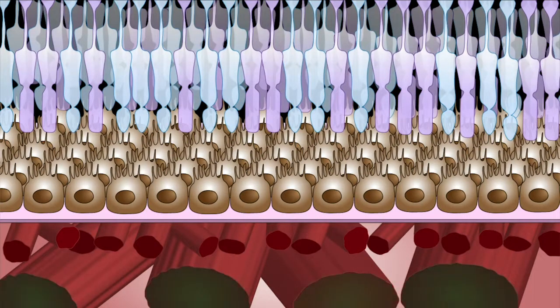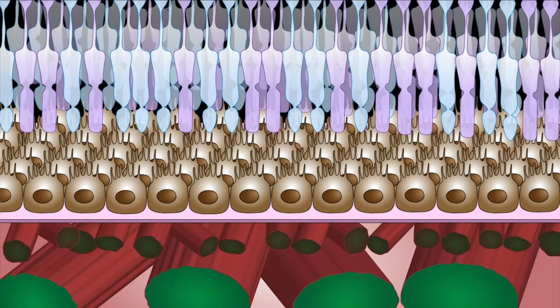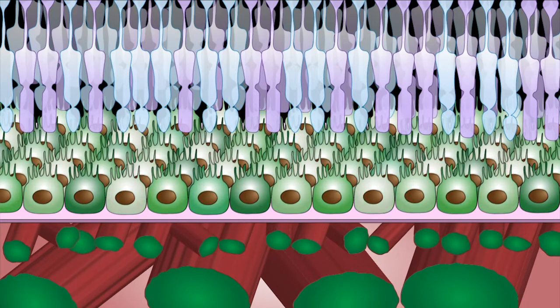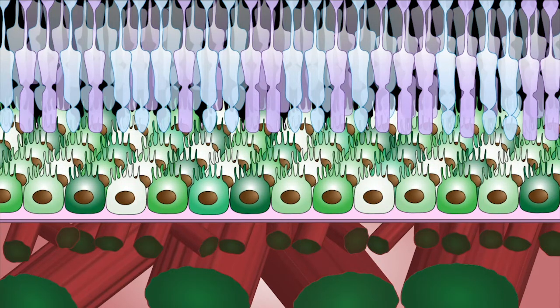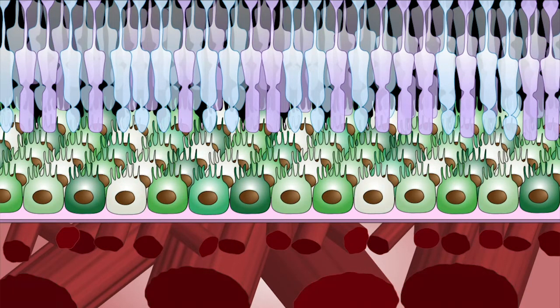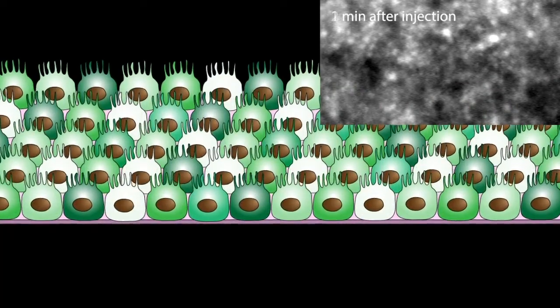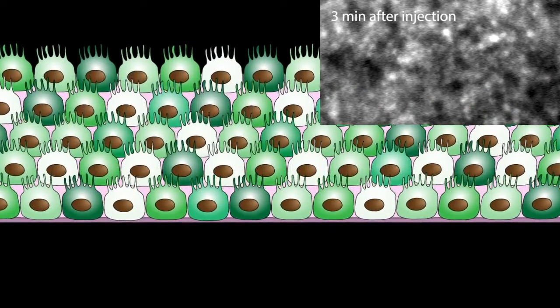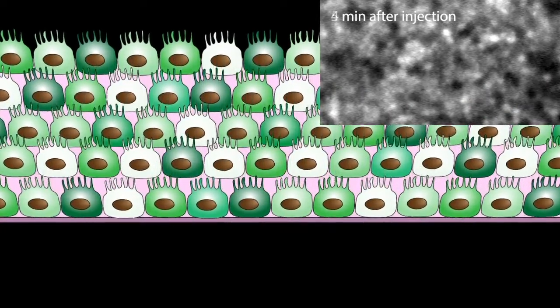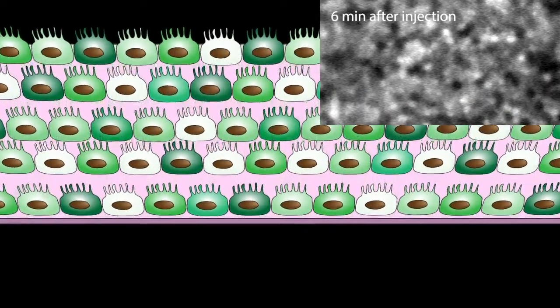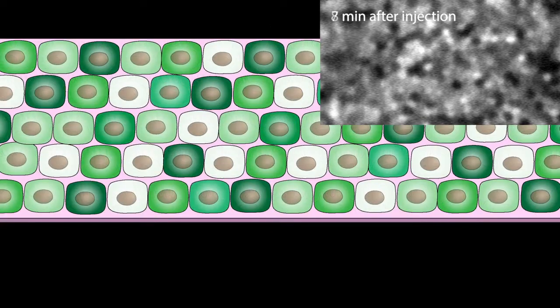After a relatively uniform uptake, it settles into a heterogeneous pattern, with neighboring cells having different amounts of fluorescence. And this heterogeneity is what enables us to distinguish neighboring cells from each other.